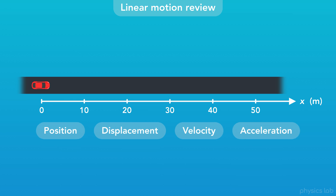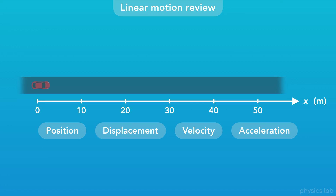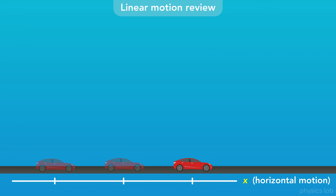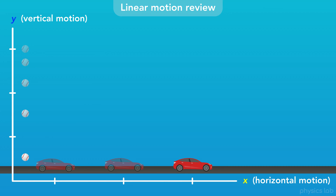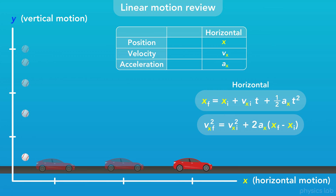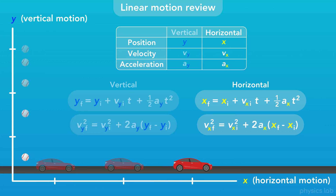So in linear motion, the position, displacement, velocity, and acceleration of an object are all described along a straight line, the x-direction. We normally use the variable x to describe horizontal linear motion, and y to describe vertical linear motion. The equations for horizontal motion use x, and the equations for vertical motion use y. But the variables and equations mean the same thing for both directions. We're just choosing to describe the motion in a way that's useful, based on how an object is moving.